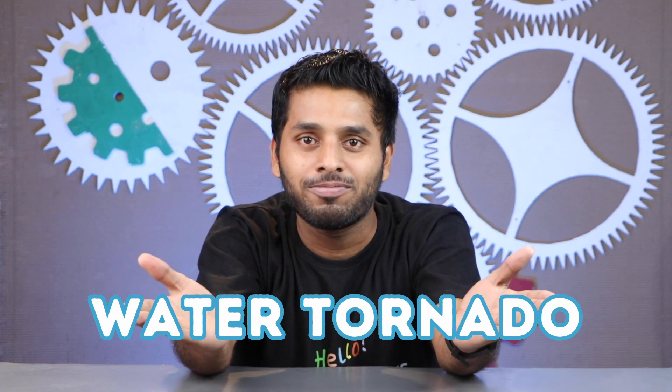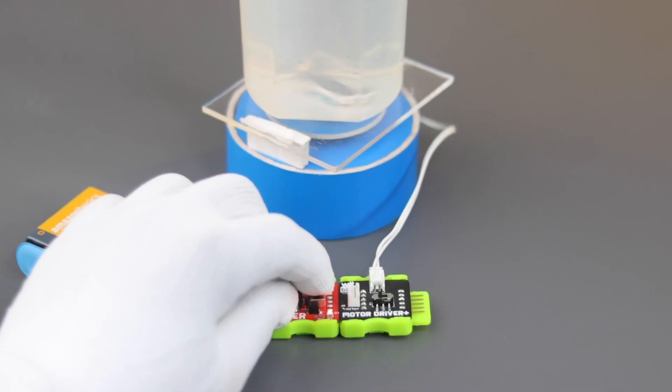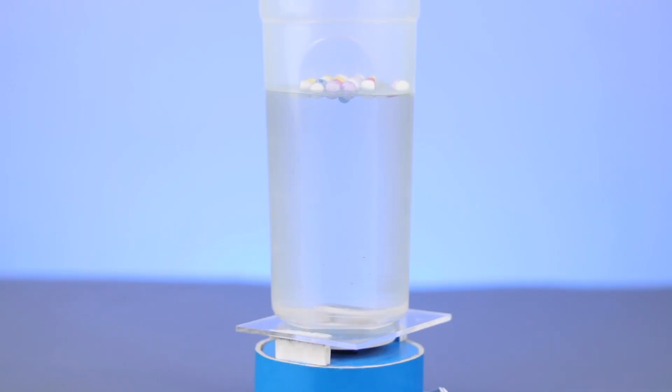Hey WitBlox makers, welcome to a new project where we are going to build electronic projects to help you learn and understand robotics in a fun and easy way. This time we are going to build a water tornado. With this project you can create a water tornado using just a power block and a motor driver block.